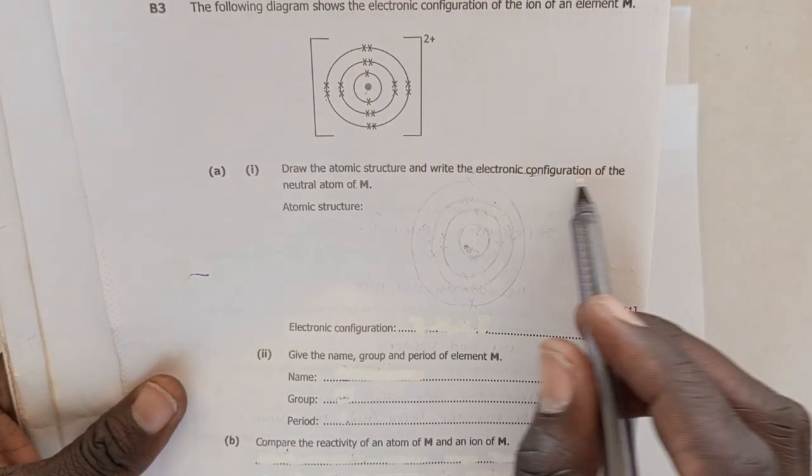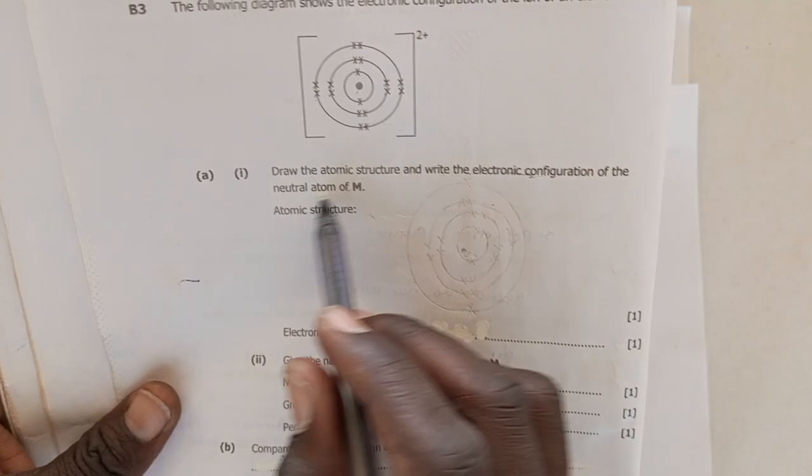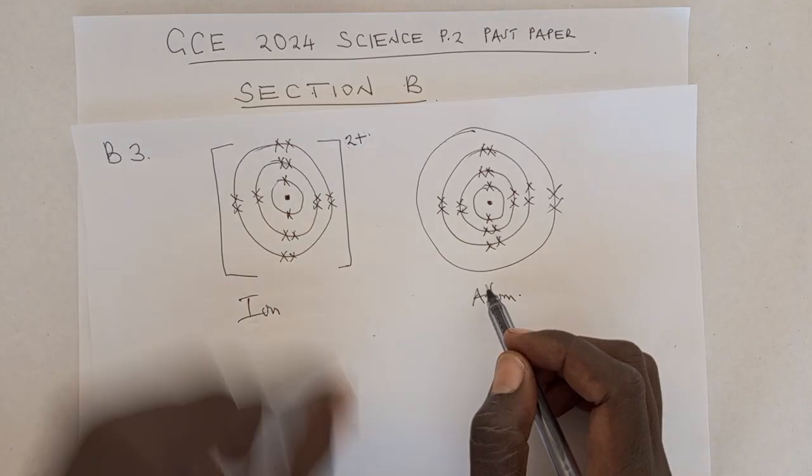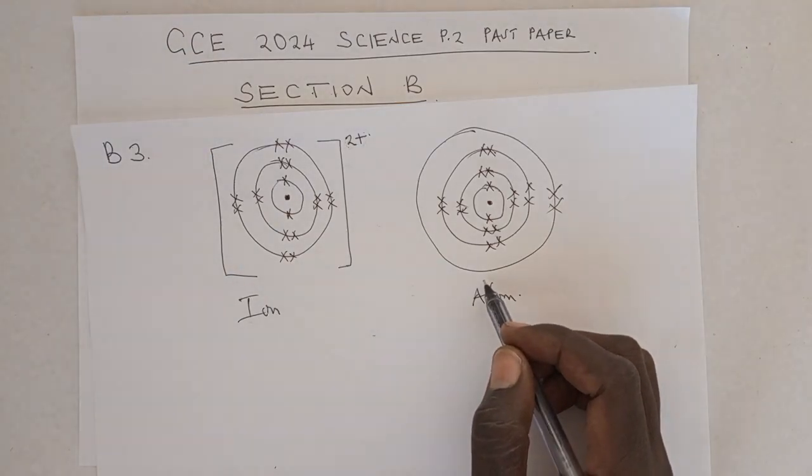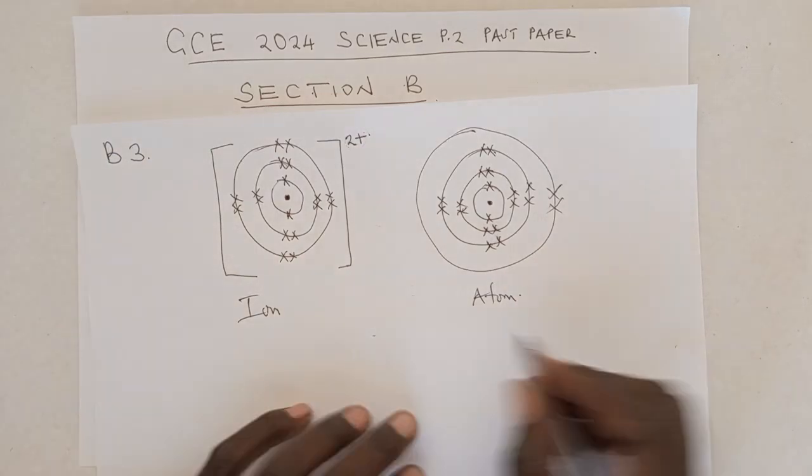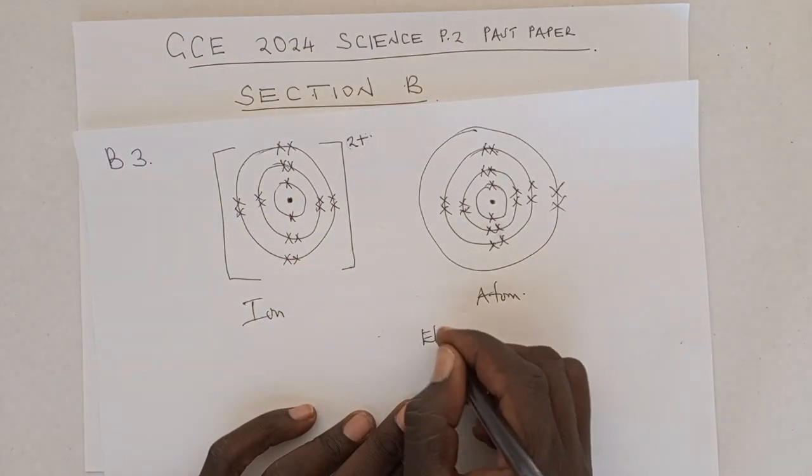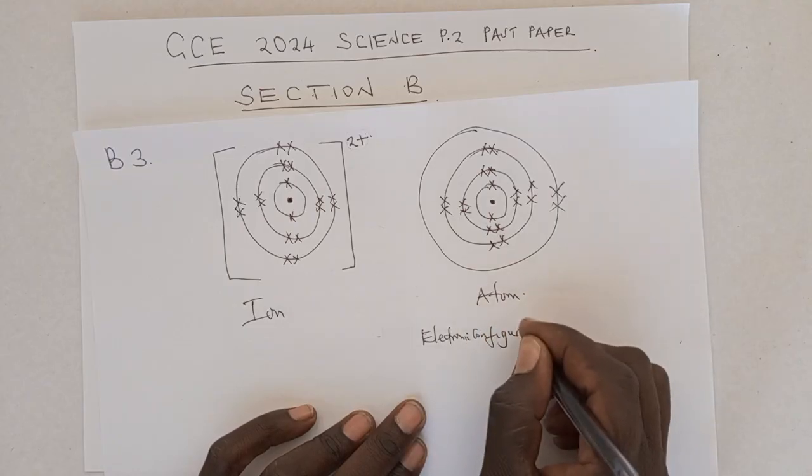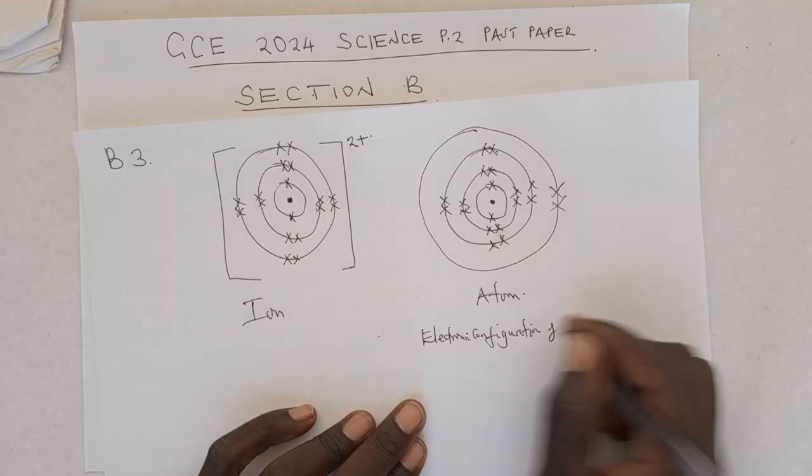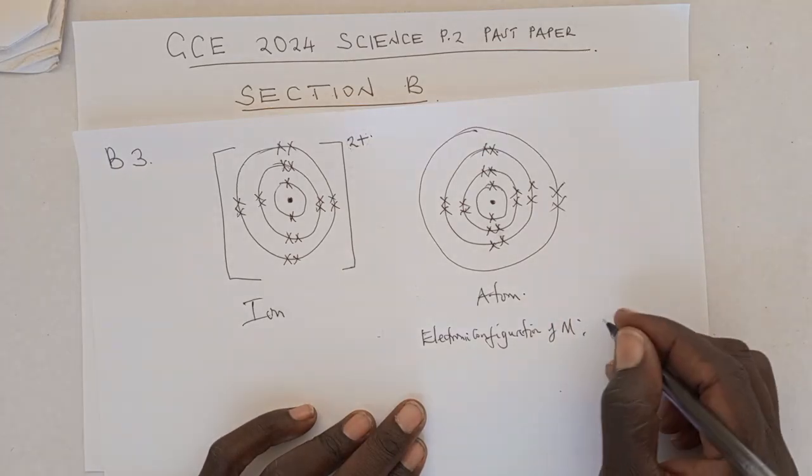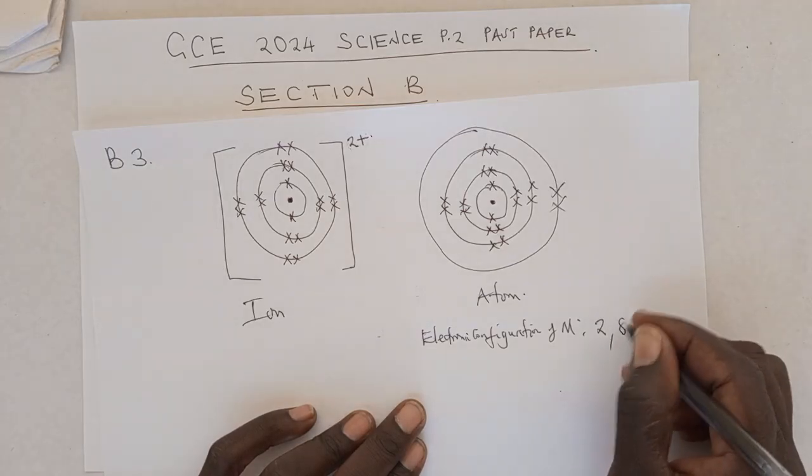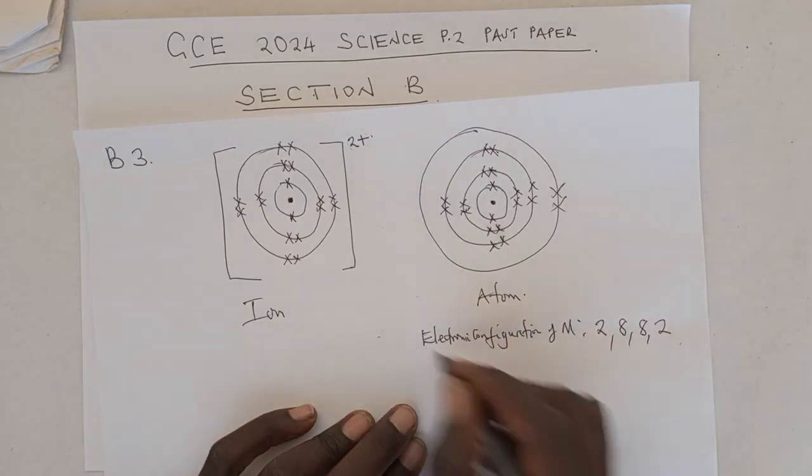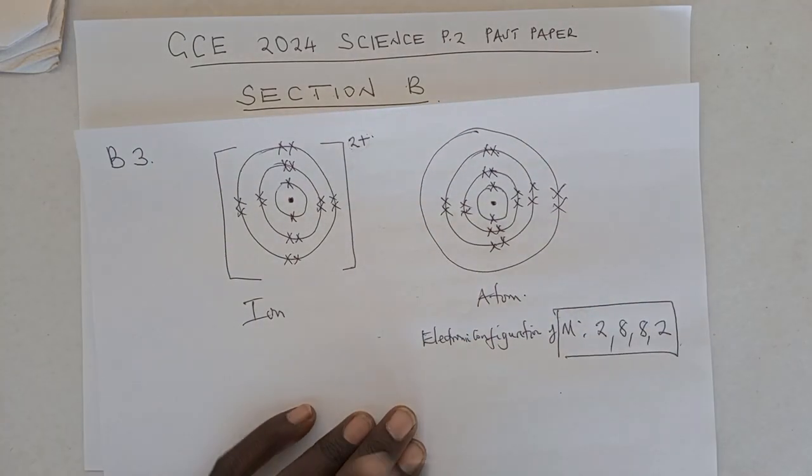So now let's go to the equations. Draw the atomic structure and write the electronic configuration of the neutral atom of M, of course. So we have just drawn the structure here. This is the structure. And its electronic configuration would be the first shell having 2 electrons, second shell having 8 electrons, third shell having 8 electrons, and the fourth shell having 2 electrons. This is the electronic configuration of M.